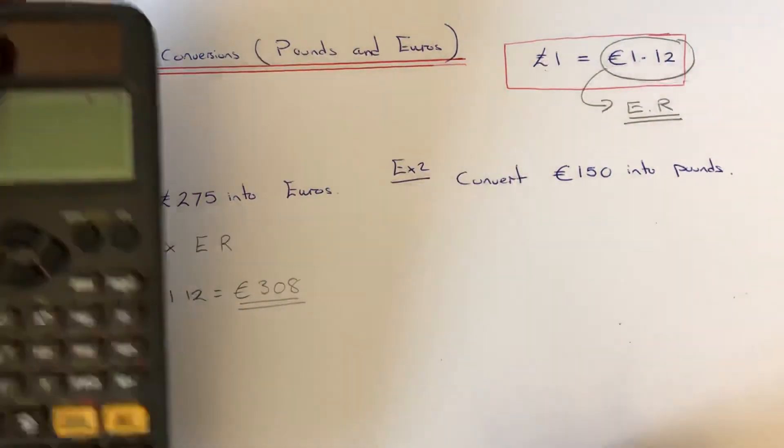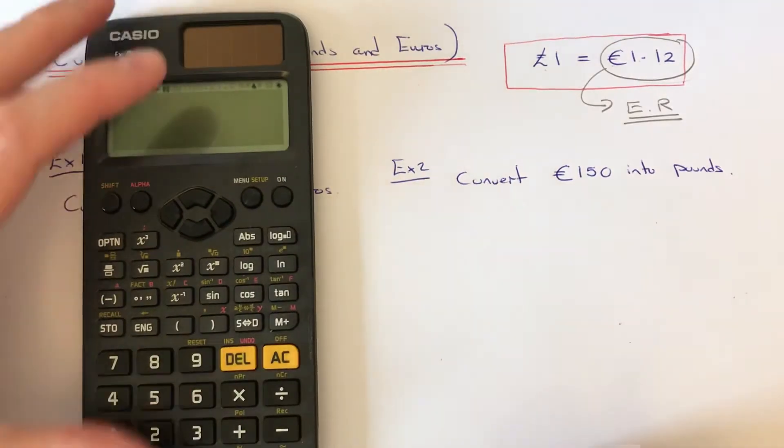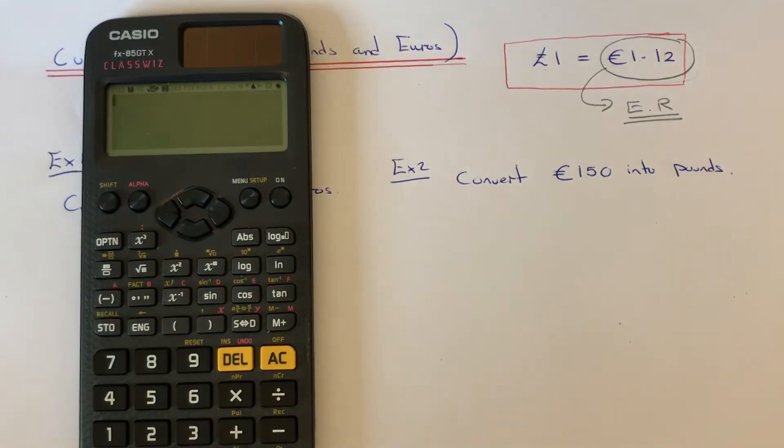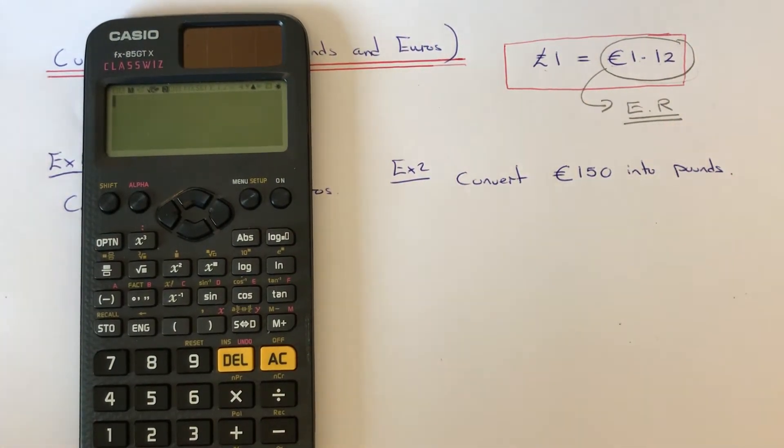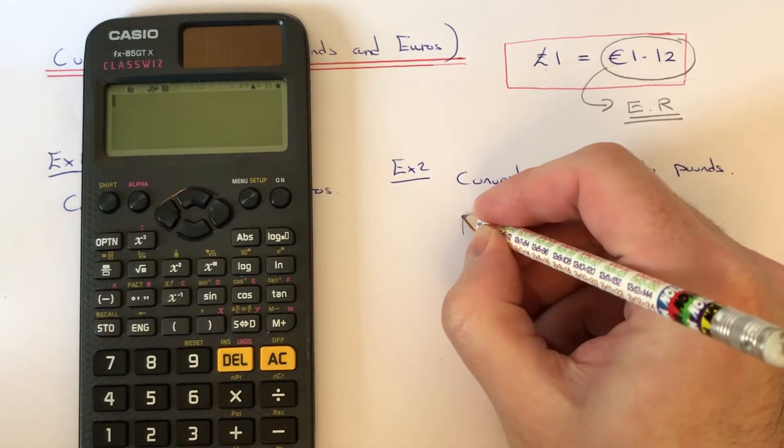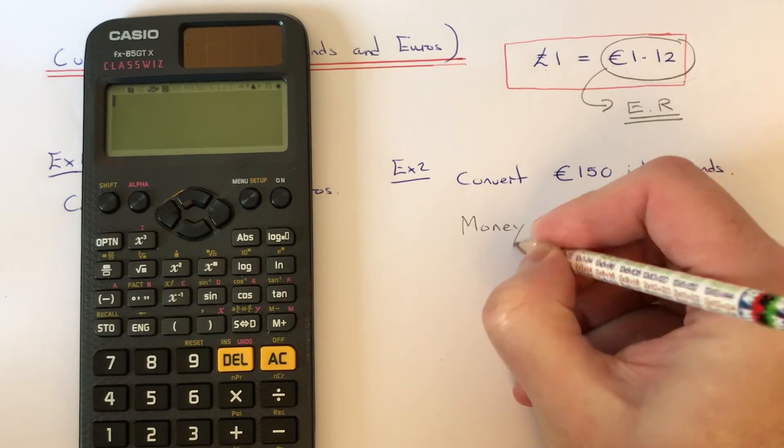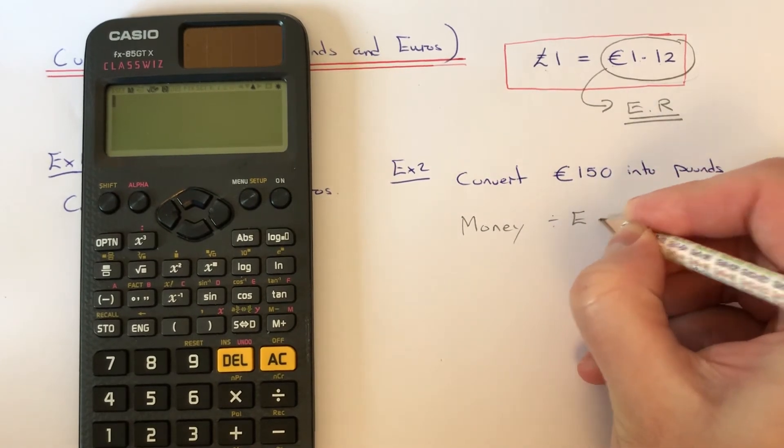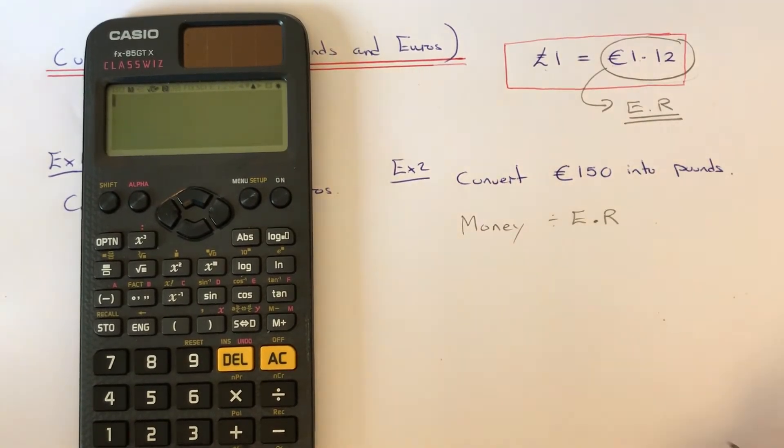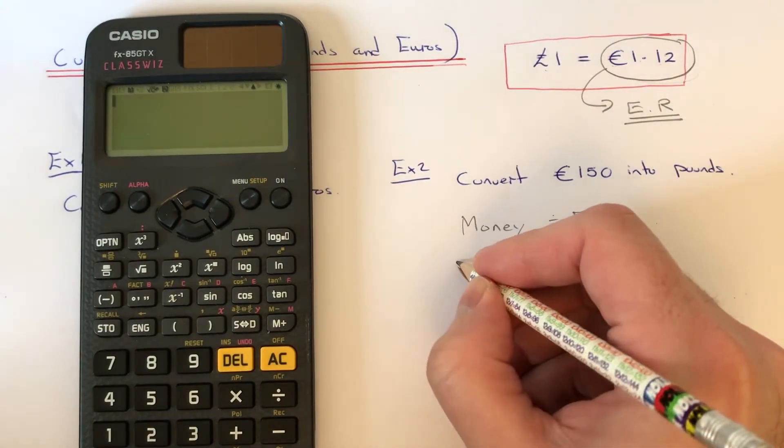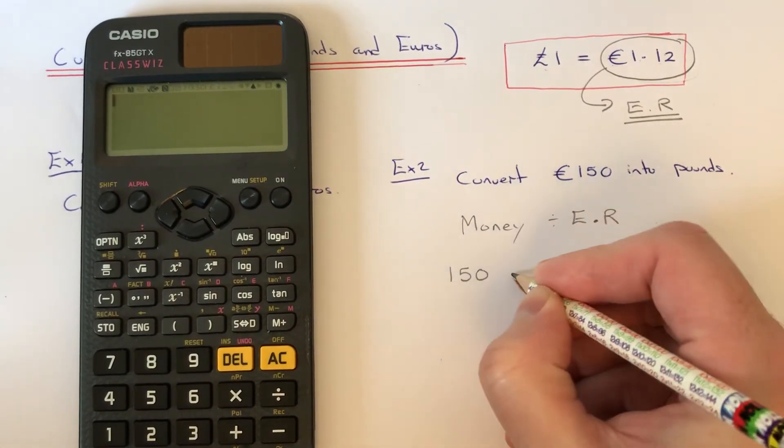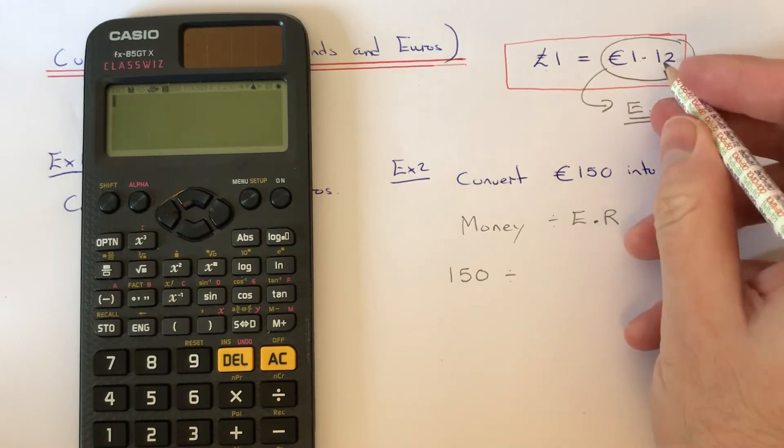Let's have a look at our second example. This time we've got to convert €150 into pounds. This time we get our money and divide it by the exchange rate number. Our money is €150 and we need to divide that by 1.12.